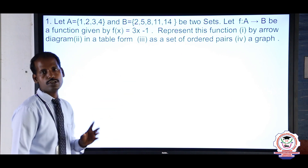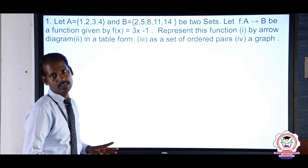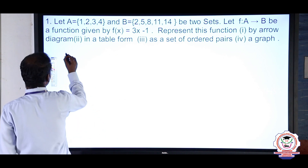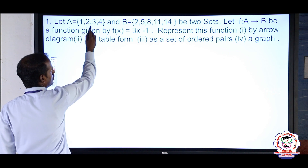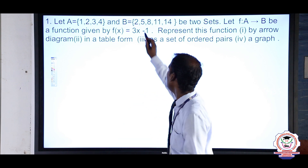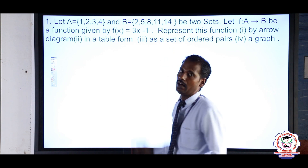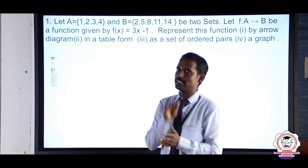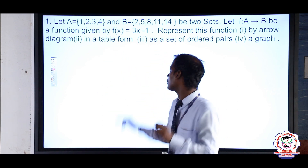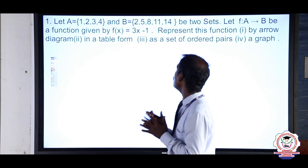First, by arrow diagram. We have to find the function values. A set is the domain, B set is the co-domain. So A set {1, 2, 3, 4} is the domain and {2, 5, 8, 11, 14} is the co-domain. We substitute each domain value into f(x) = 3x − 1 to get the range values.